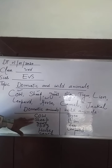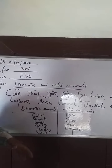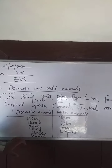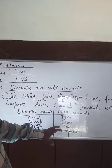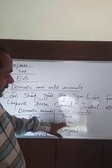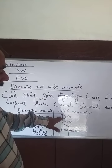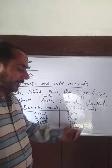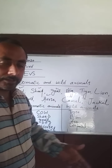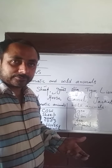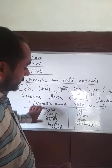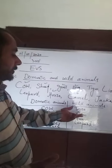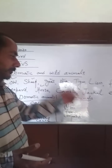Cow, sheep, goat, dog, horse, camel and so on — these are domestic animals, also called pet animals. Tiger, lion, fox, leopard — these are wild animals. So we can classify them into two groups: domestic or pet animals, and wild animals.